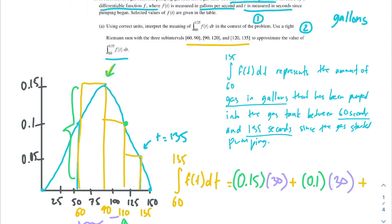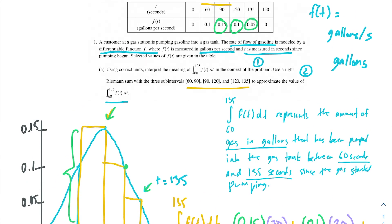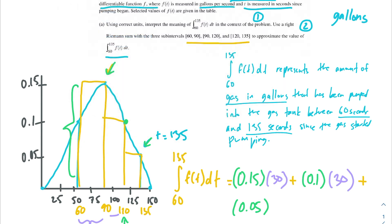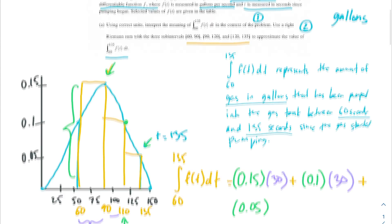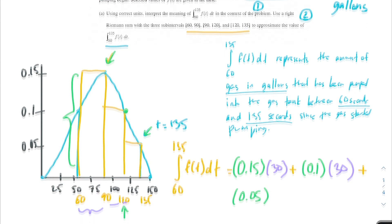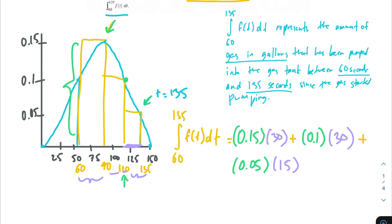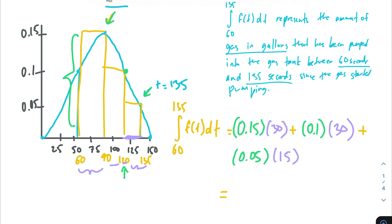For the final subinterval, the height is f of 135, which is 0.05. You might be tempted to autopilot and multiply by 30, but the width of this last rectangle is actually 15 — the difference between 135 and 120. So we multiply 0.05 by 15. These are our three subintervals added up using the right Riemann sum. This is a calculator problem — you should get 8.25, and make sure you include your units: 8.25 gallons.